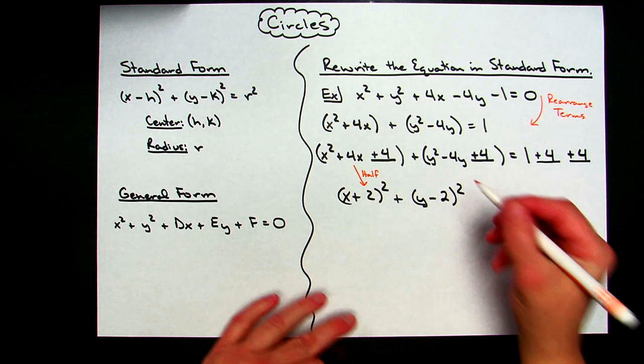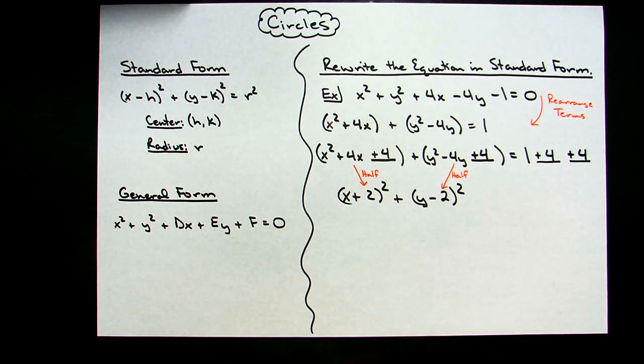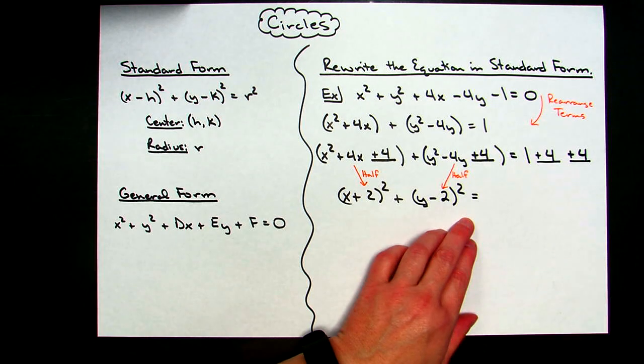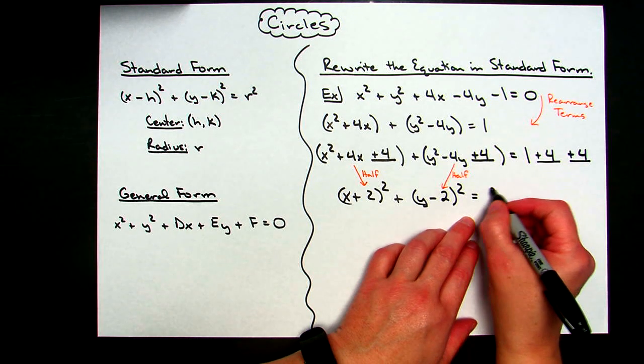And again, it's half of that right there. And then when I add on the right hand side, I'm going to have 4 plus 4 plus 1. That's going to give me a 9 over there.